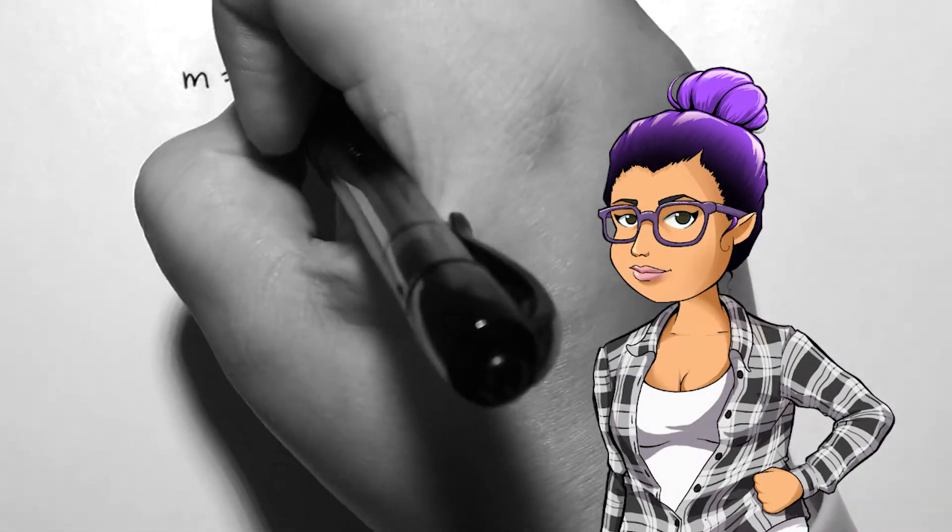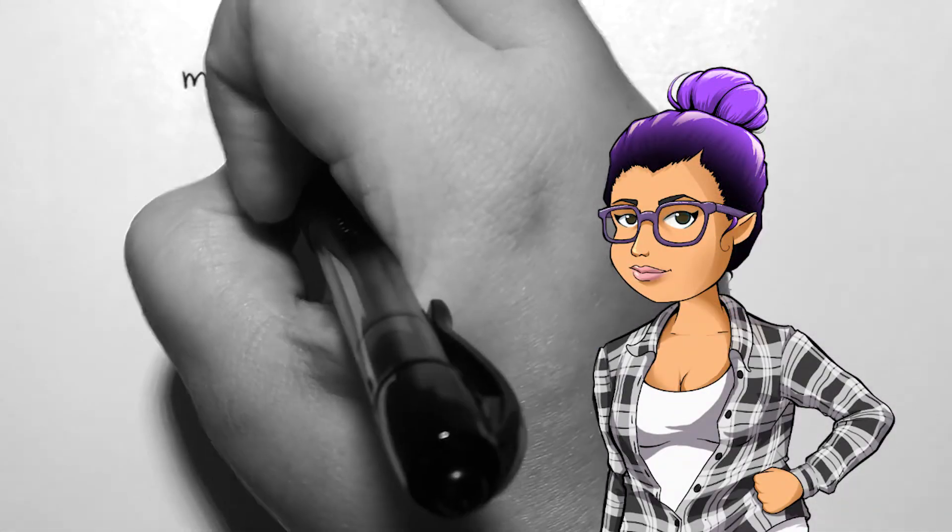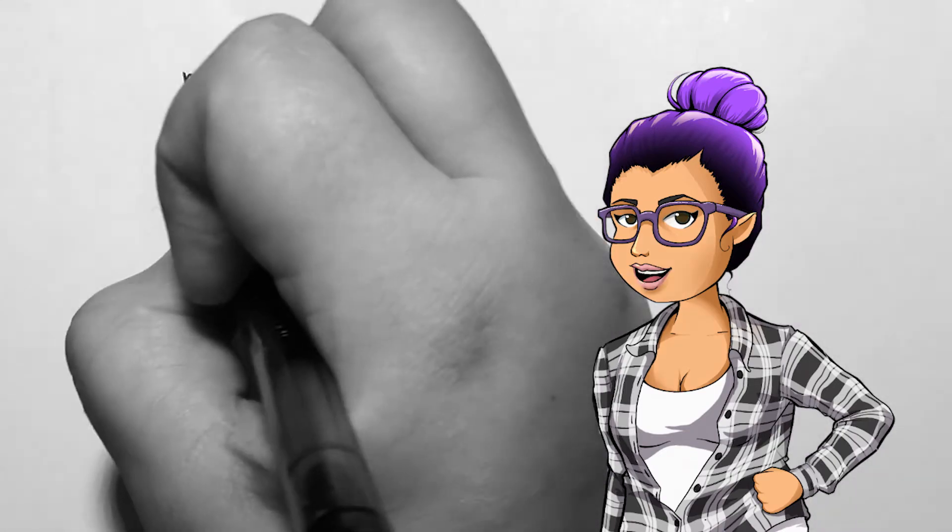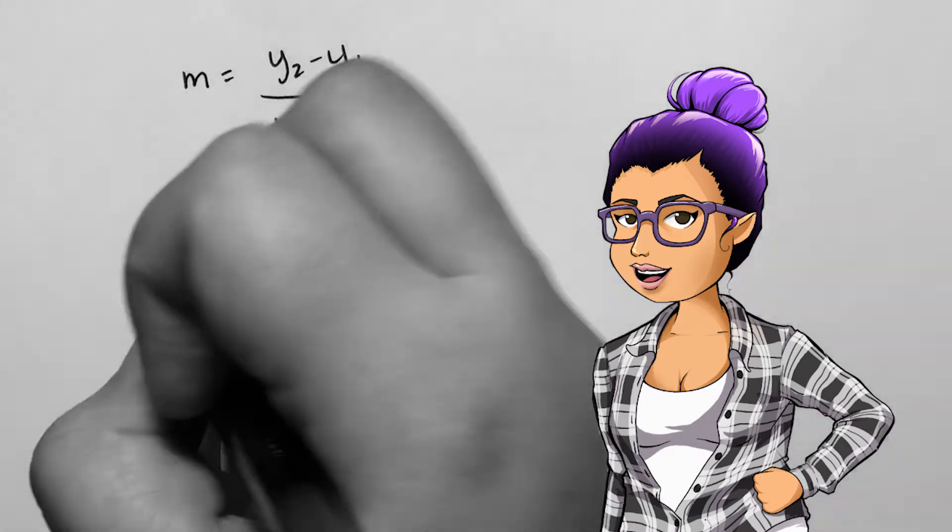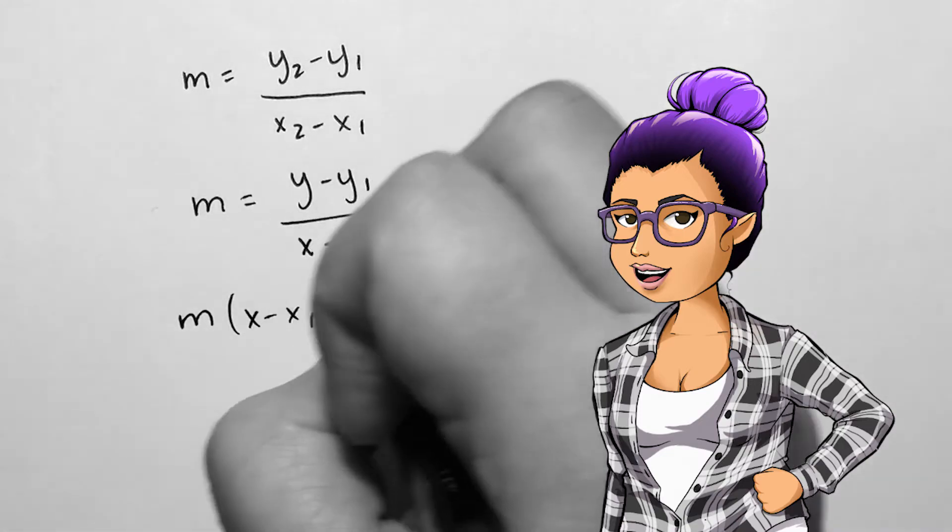Take the formula for slope: m equals y2 minus y1 all over x2 minus x1. Let's say that we know the slope and we know the point x1, y1, but the other x and y are both variables.